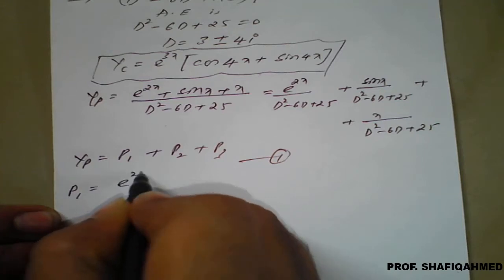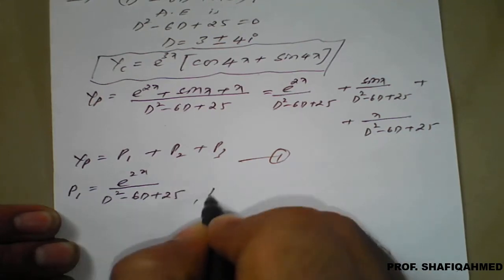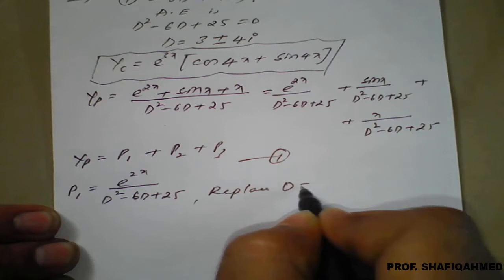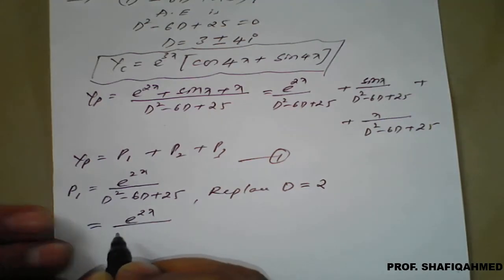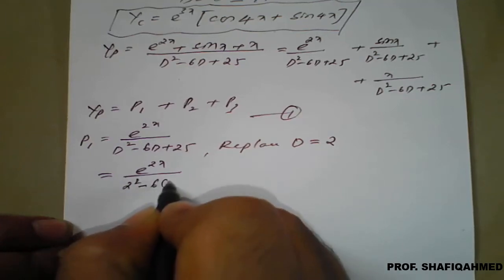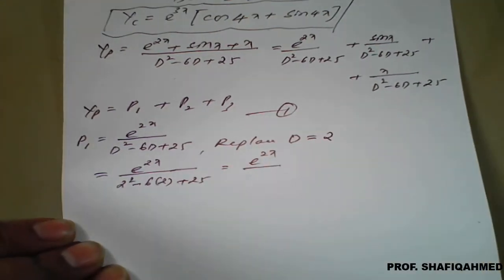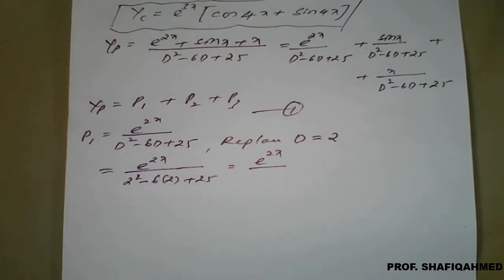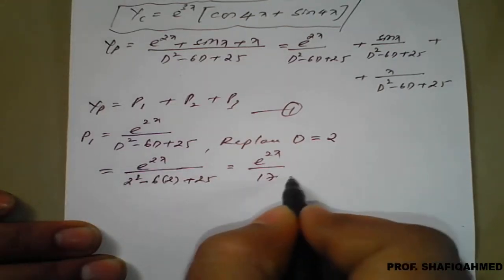P1 is nothing but e raised to 2x divided by d squared minus 6d plus 25. Here we replace d equal to 2 (Type 1). Therefore, it becomes e raised to 2x divided by 2 squared minus 6 times 2 plus 25. Simplifying: 4 minus 12 plus 25 equals 17. So we got the first answer, P1 equals e raised to 2x upon 17.